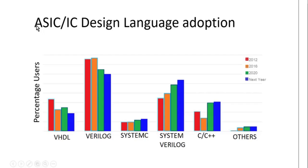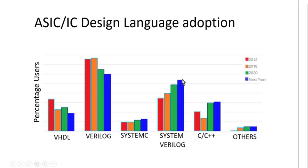The first survey on your screen is related to ASIC design language. It is very clear that Verilog has more active users compared to VHDL. Looking at the graph for SystemVerilog — the bars represent 2012, 2016, 2020, and 2021 in blue — you can see active VHDL users are reducing. Verilog is also showing a downtrend, but importantly, SystemVerilog, which is a superset of Verilog, has an exponential upward trend.